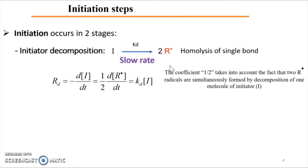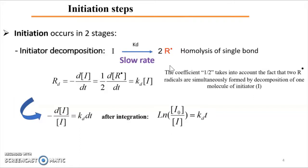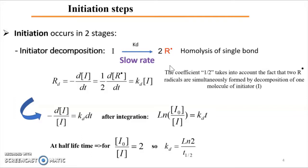From the derivation and integration of d[I]/dt, we obtain ln([I₀]/[I]) = kd·t. At half-lifetime, the ratio gives kd = ln(2) / t½, or equivalently, t½ = ln(2) / kd. As you remember, the half-lifetime is the time needed to decompose 50 percent of the initiator.